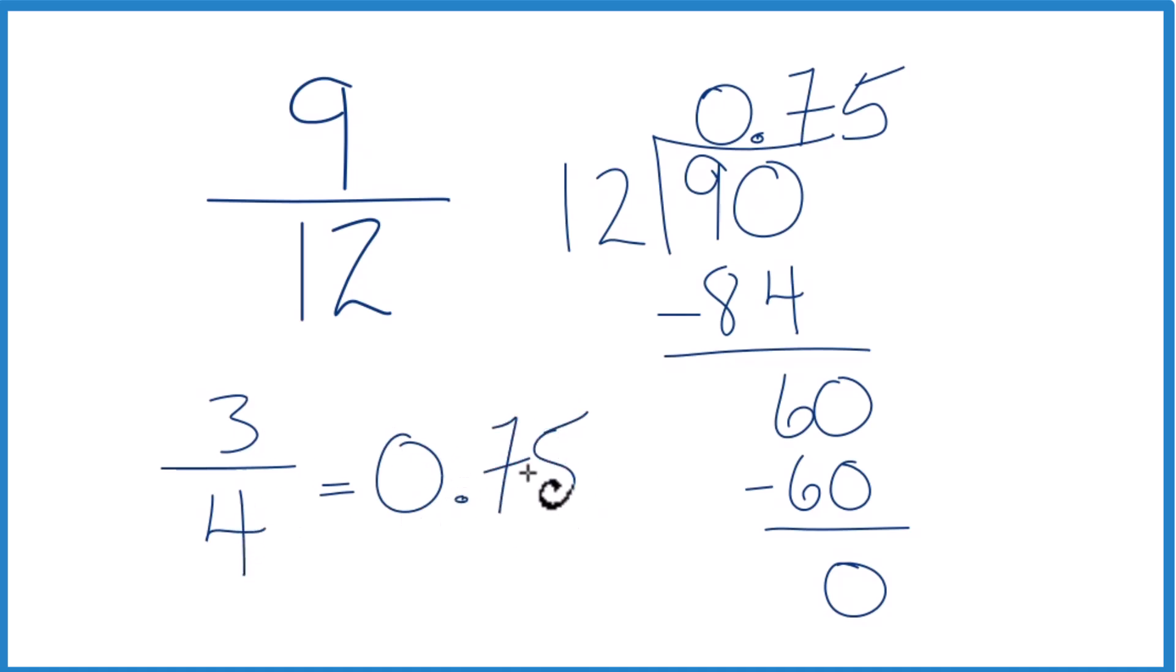And if you divided 3 by 4, you get 0.75. This is Dr. B converting the fraction 9 twelfths to a decimal. The answer is 0.75. Thanks for watching.